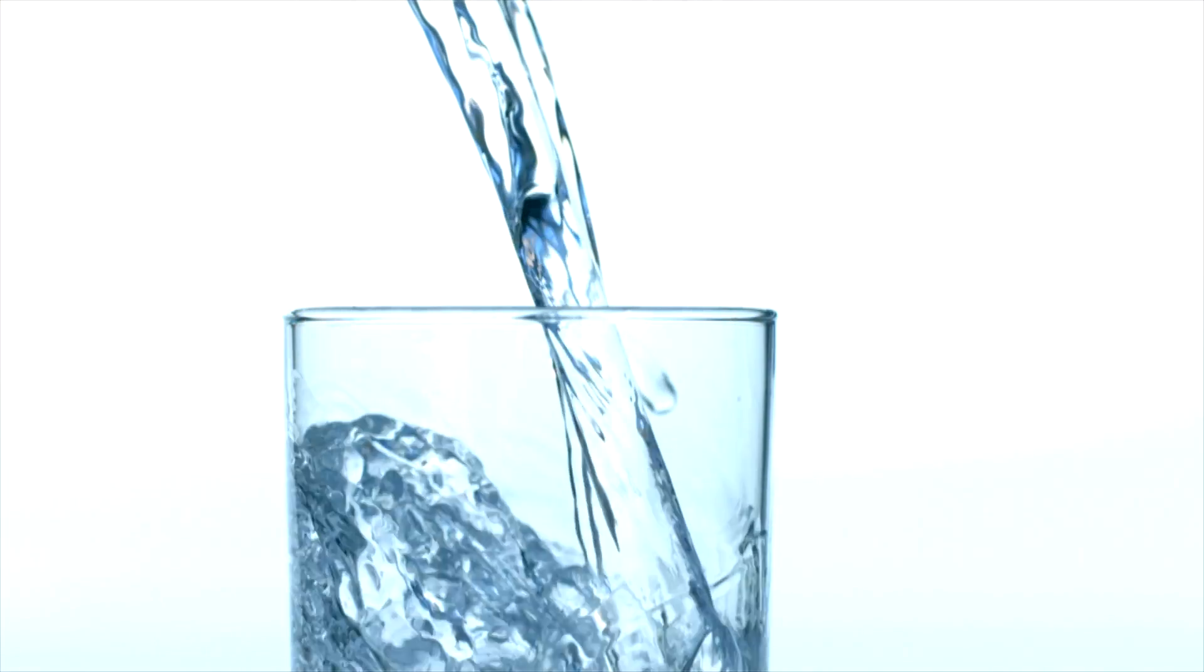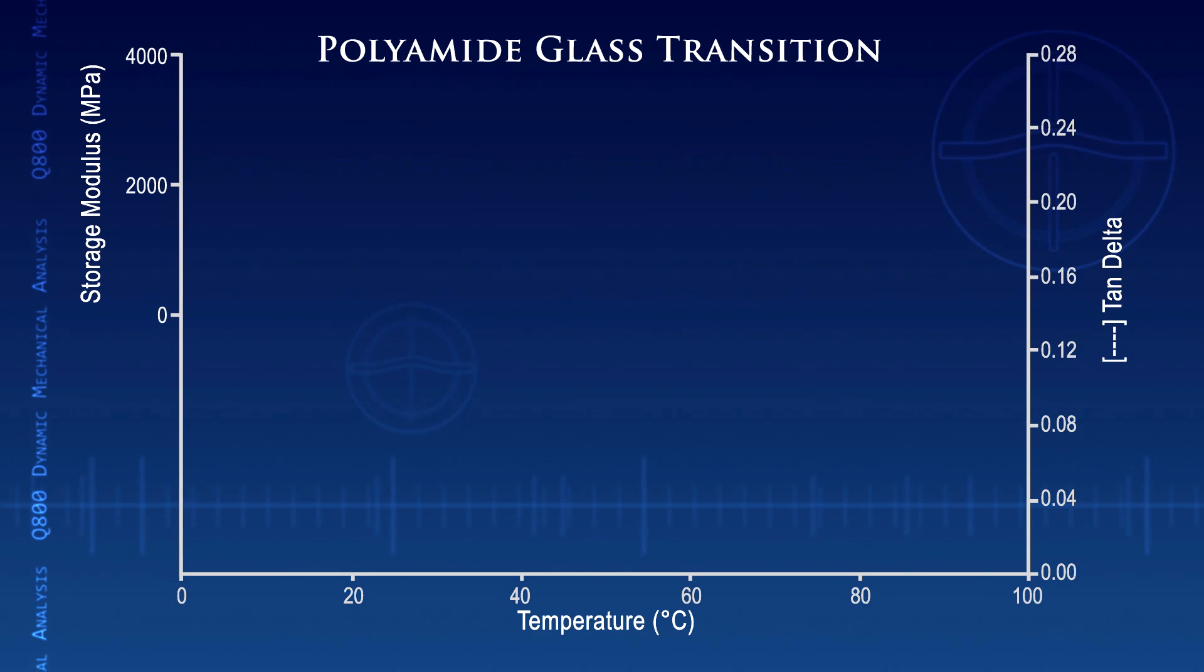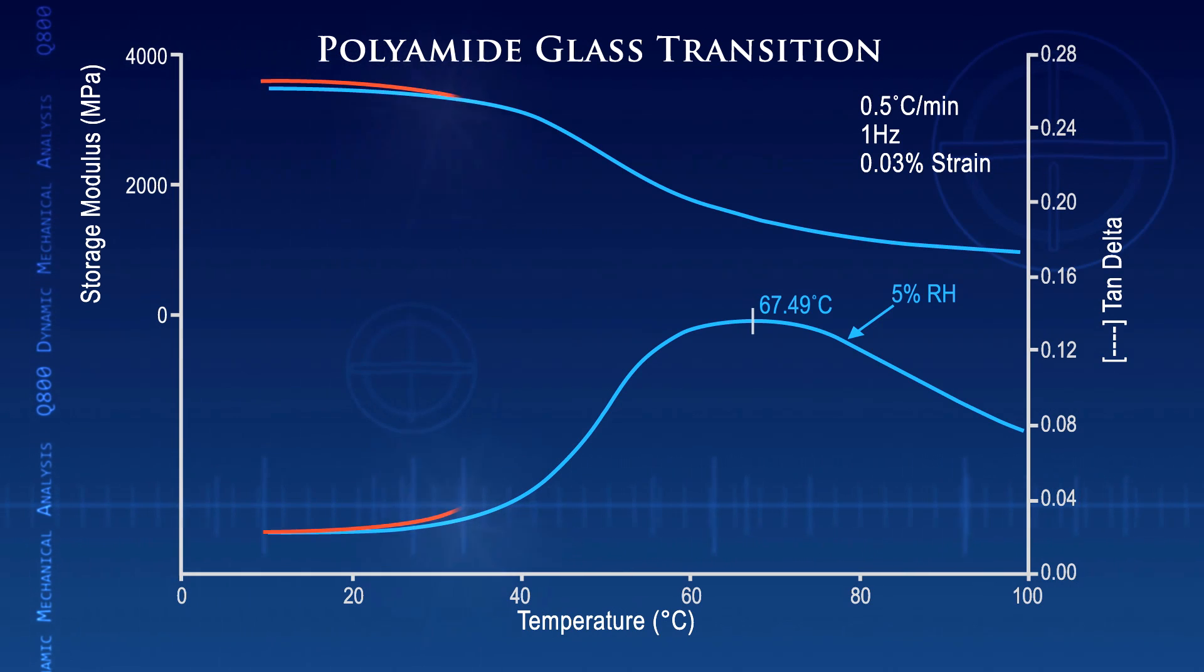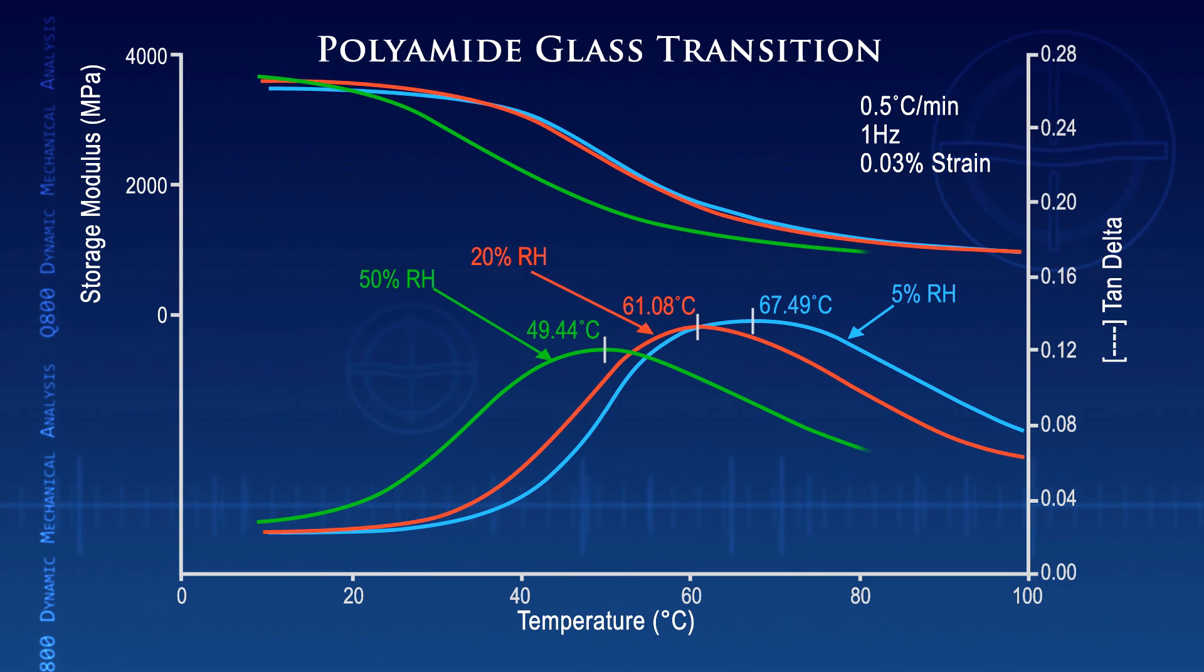Water can have a plasticizing effect on many polymers. In this example, the glass transition of a polyamide film is measured as a function of temperature over a range of relative humidity. Increasing the RH from 5% to 80% results in a decrease in glass transition temperature of over 35 degrees Celsius.